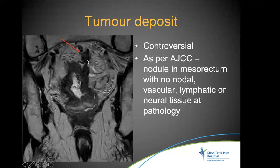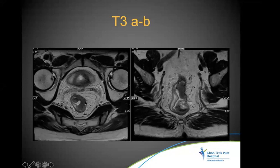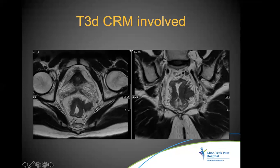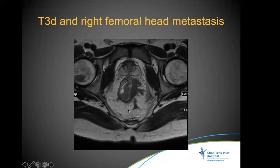Tumor deposit is a controversial entity — per AJCC, it is a nodule in the mesorectum with no nodal, vascular, lymphatic, or neural tissue on pathology. On MRI it is very difficult to distinguish tumor deposit from a node. Tumor deposits are generally presumed to be associated with venous invasion. We should always look at all corners — for example, a focal lesion in the femoral head on the same image can indicate distant metastasis.